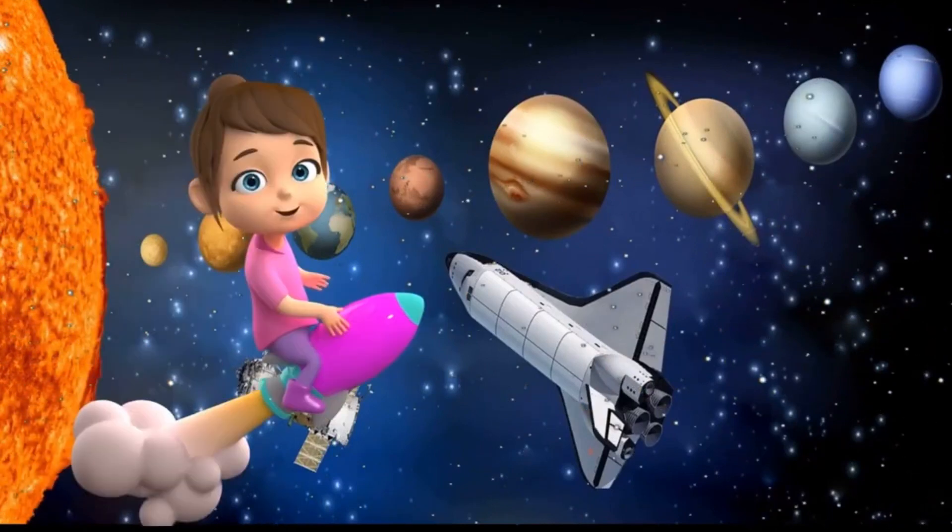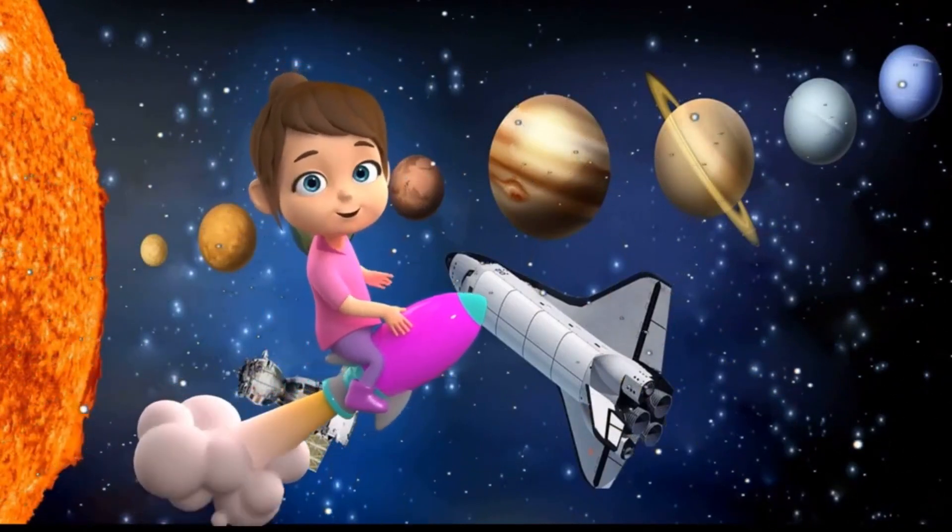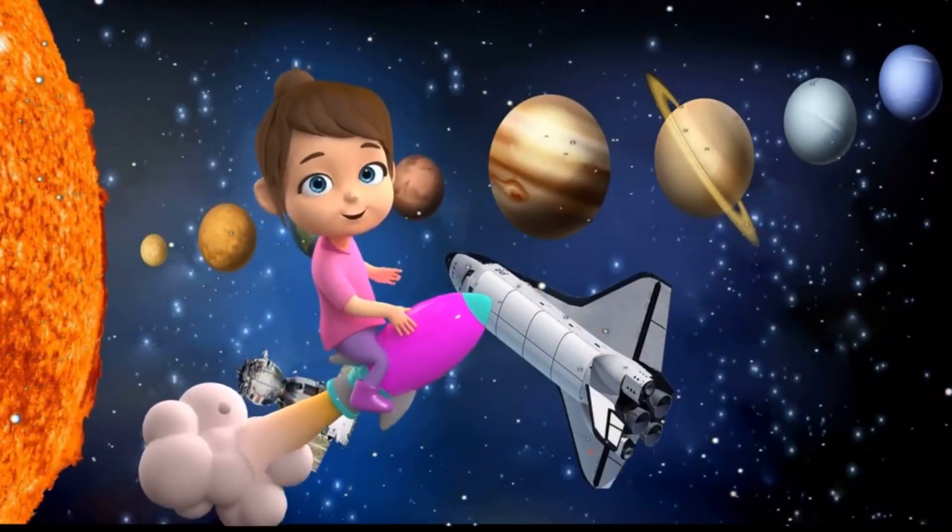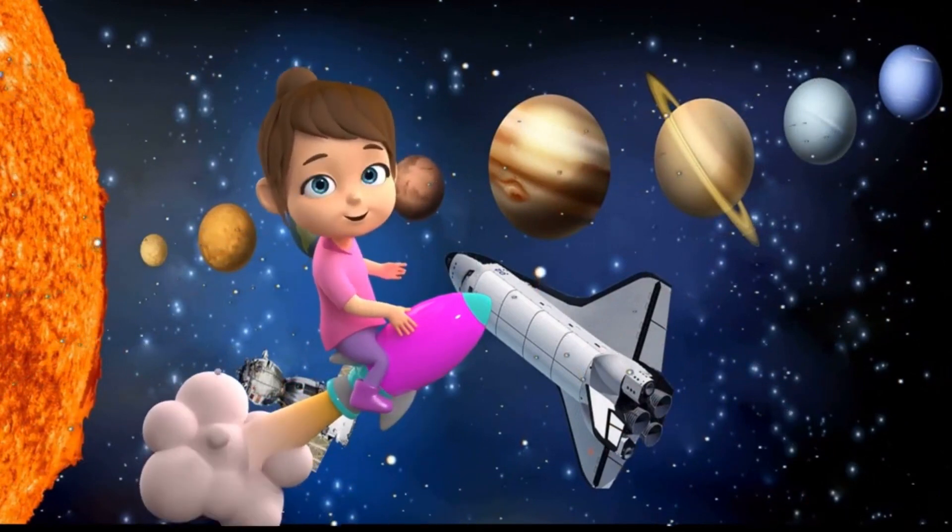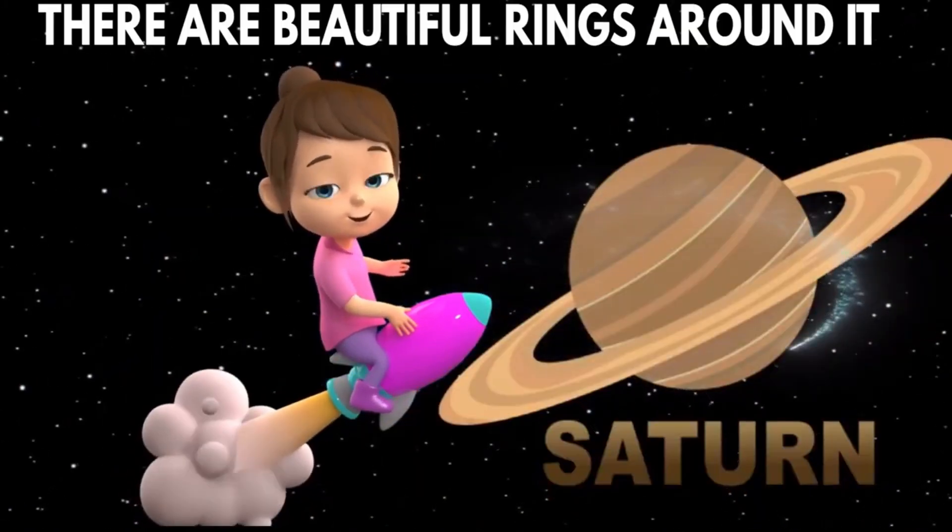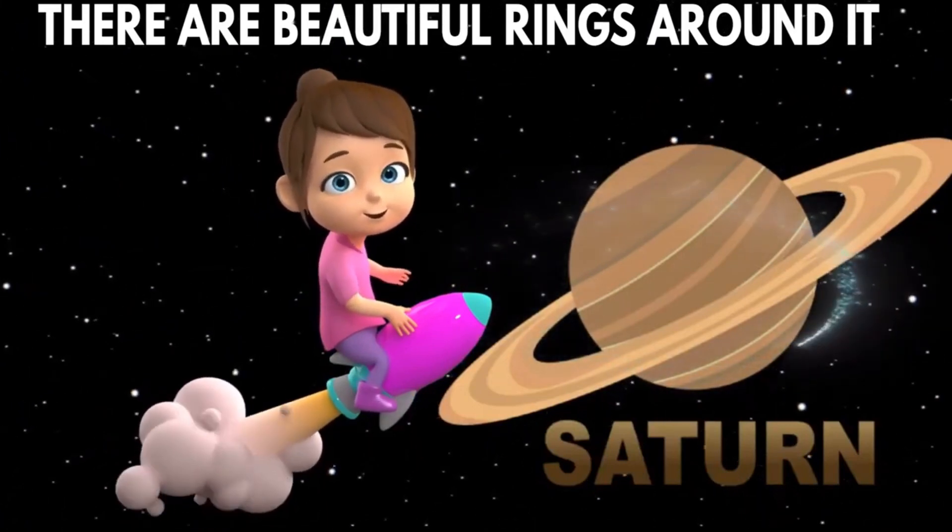The sixth planet, Saturn, is the second largest planet in the solar system. It is yellowish in color. It has beautiful rings around it that are made up of ice and dust.